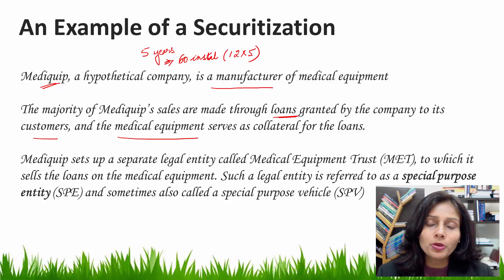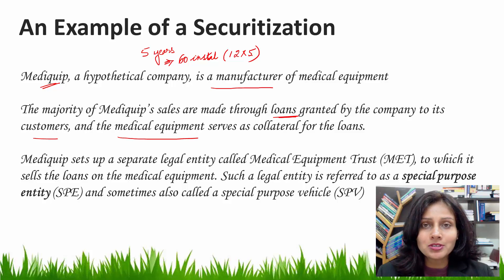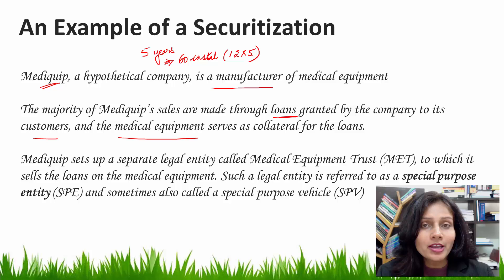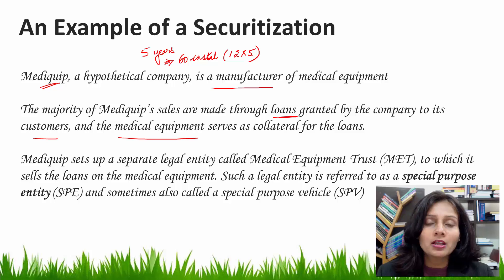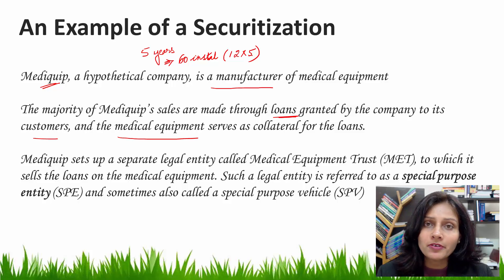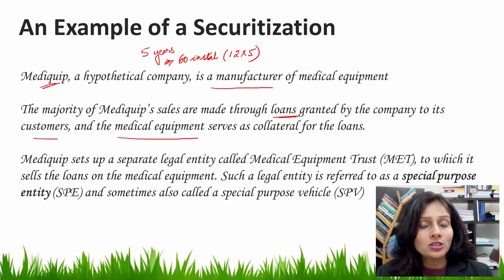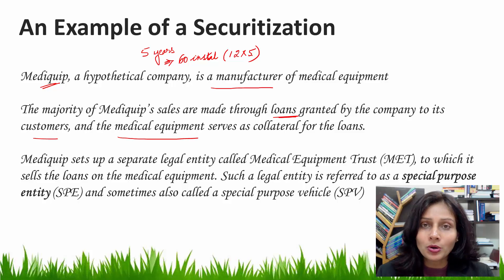The credit department in MediCube usually takes the decision of whether or not to extend a loan to a particular customer, and it also services these loans. Loan servicing refers to administering any aspect of the loan, including collecting payments from the borrowers, notifying borrowers who may be delinquent, and recovering and disposing of the medical equipment — that is the collateral — in case the customer does not make scheduled payments. Although in usual cases the servicer need not be the originator of the loans, in this example for simplicity the originator is also the servicer.